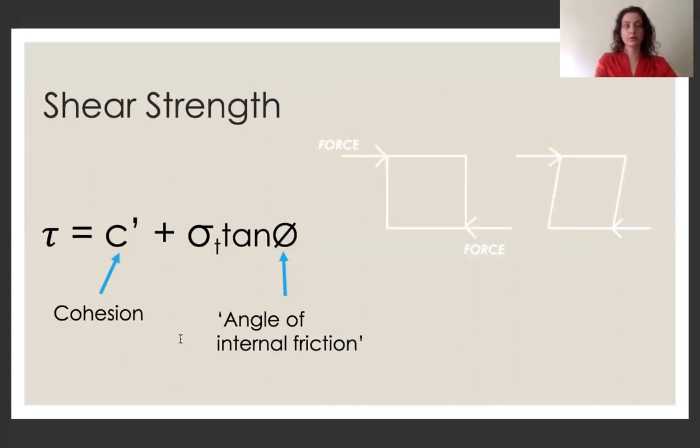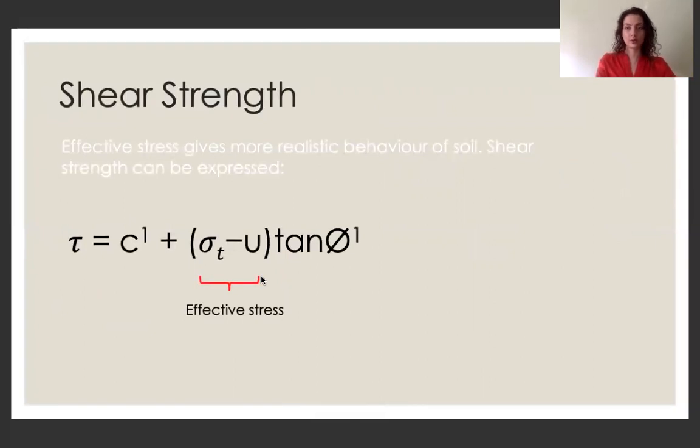So now let's look at shear strength. For shear strength, we consider this formula here. So C in this case is cohesion, but also on a diagram, it's essentially the given value for the intercept of the straight line on the shear stress axis. And then added to the total stress multiplied by the tan of the angle of internal friction. And this angle can encompass many different types of angles and have many different values. And that essentially tells us when shear failure is likely. But to consider a more realistic situation, we want to include effective stress in the formula because it considers the impact of water on the soil. So here we would replace the total stress with the effective stress instead.